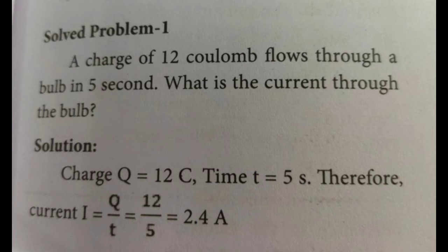Now we will see this solved problem. A charge of 12 coulomb flows through a bulb in 5 seconds. What is the current through the bulb? Here, we know that charge Q is equal to 12 coulomb, time T is equal to 5 seconds. Therefore, current I = Q/T = 12/5 = 2.4 ampere.